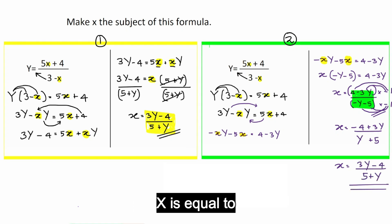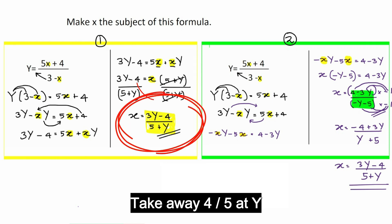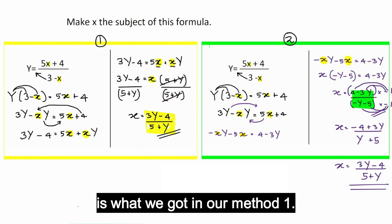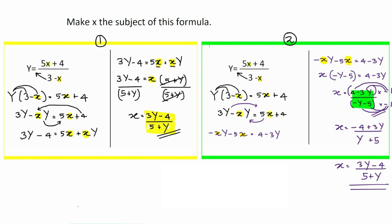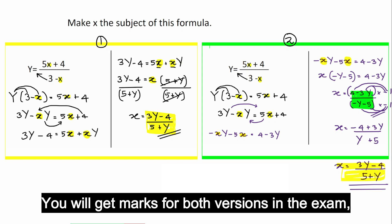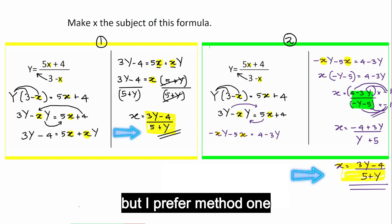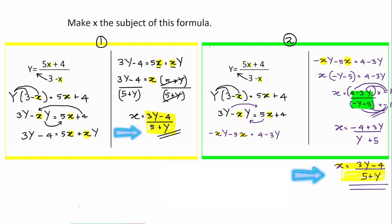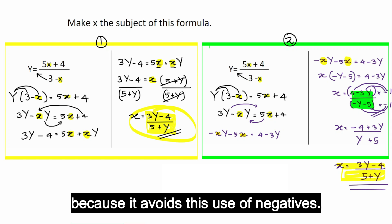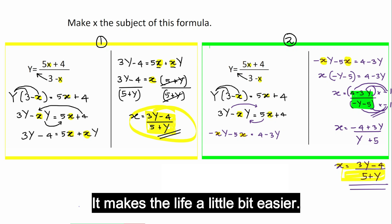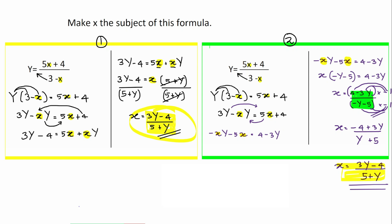Now, if you look at this one, you can clearly see x is equal to 3y take away 4 divided by 5 at y is what we got in our method 1. They both are exactly the same answer. You'll get marks for both versions in the exam, but I prefer method 1 because it avoids this use of negatives. It makes life a little bit easier.